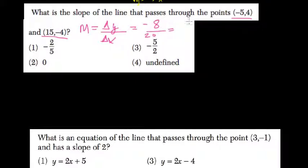divide both by 2, we get negative 4 over 10. Reduce it again, negative 2 fifths.